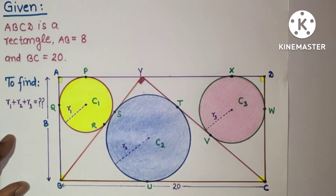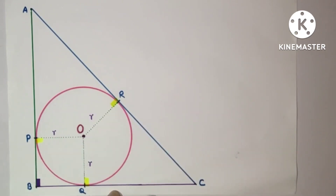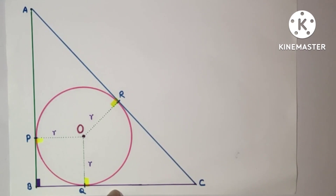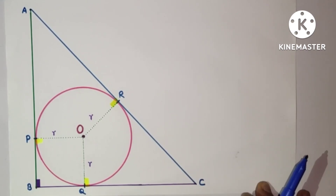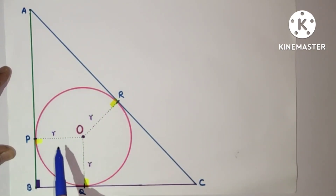To solve this question, we will discuss a condition in which a circle is inscribed in a right angle triangle, and then we will get a relation between the radius and the sides of the triangle. This is the situation: one incircle is inscribed in a right angle triangle, and let the radius of the circle be r — that is, the inradius is r.